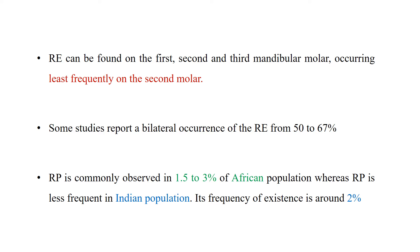Radix paramolaris is very rare compared to radix entomolaris. It has been observed in 1.5% to 3% of African populations and about 2% in Indian populations. In Indian populations, the most common type of radix encountered is radix entomolaris.